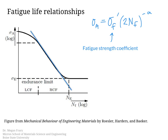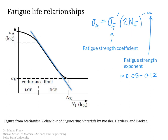The fatigue strength coefficient is related to the tensile strength of the material — roughly one and a half to two times the tensile strength. The fatigue strength exponent 'a' is typically on the order of 0.05 to 0.12 for smooth samples. It's written here as negative a, as the textbook does, though sometimes the negative sign is wrapped into the value of a. On a log-log plot this power law gives a linear relationship whose slope gives us 'a'. Note that the x-axis uses 2N_F, so care is needed when plotting.